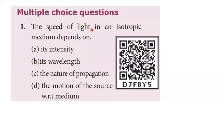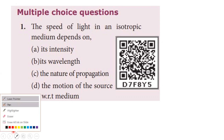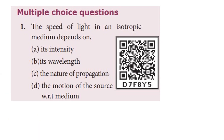The speed of light in an isotropic medium depends on the wavelength. So the second option is correct.